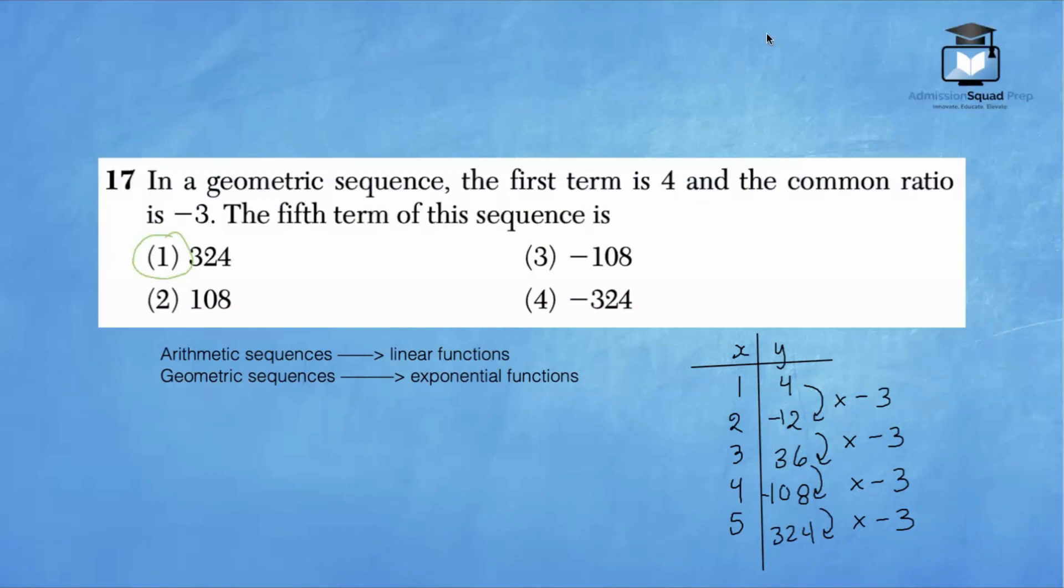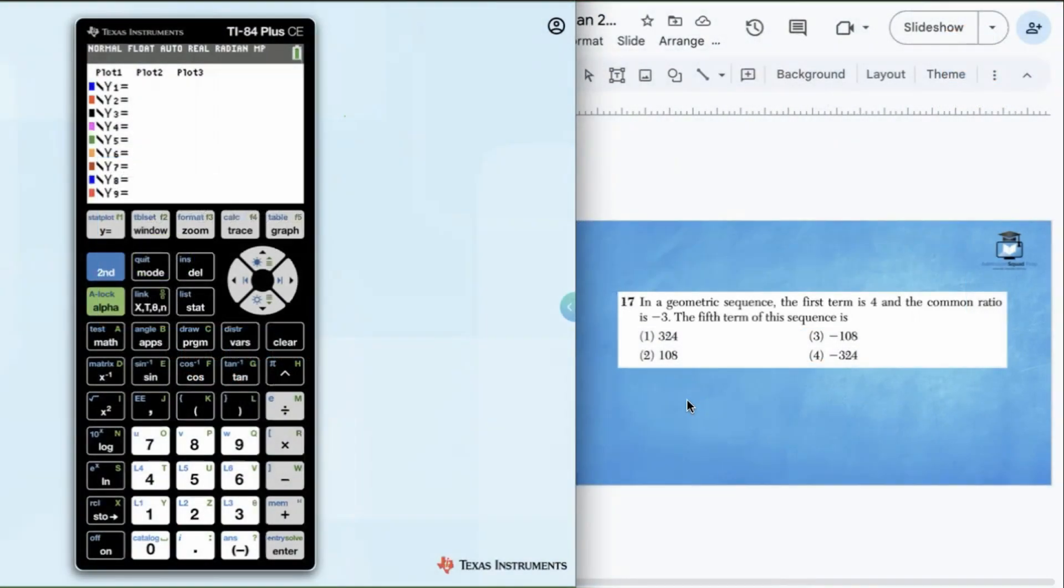Now we can use the calculator to get this answer as well. Let's take a look. The explicit formula for any geometric sequence is a sub n equals a sub 1 times r to the n minus 1. An explicit function allows you to find any term within a sequence.